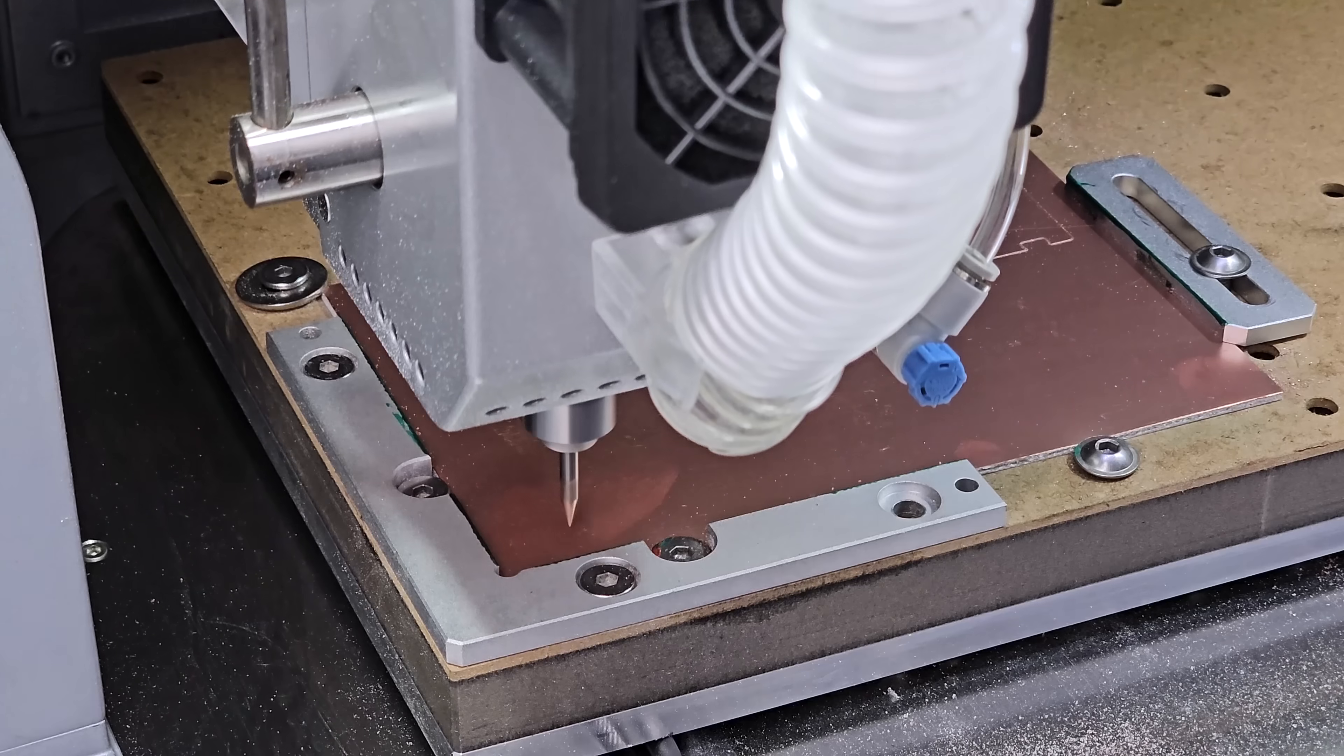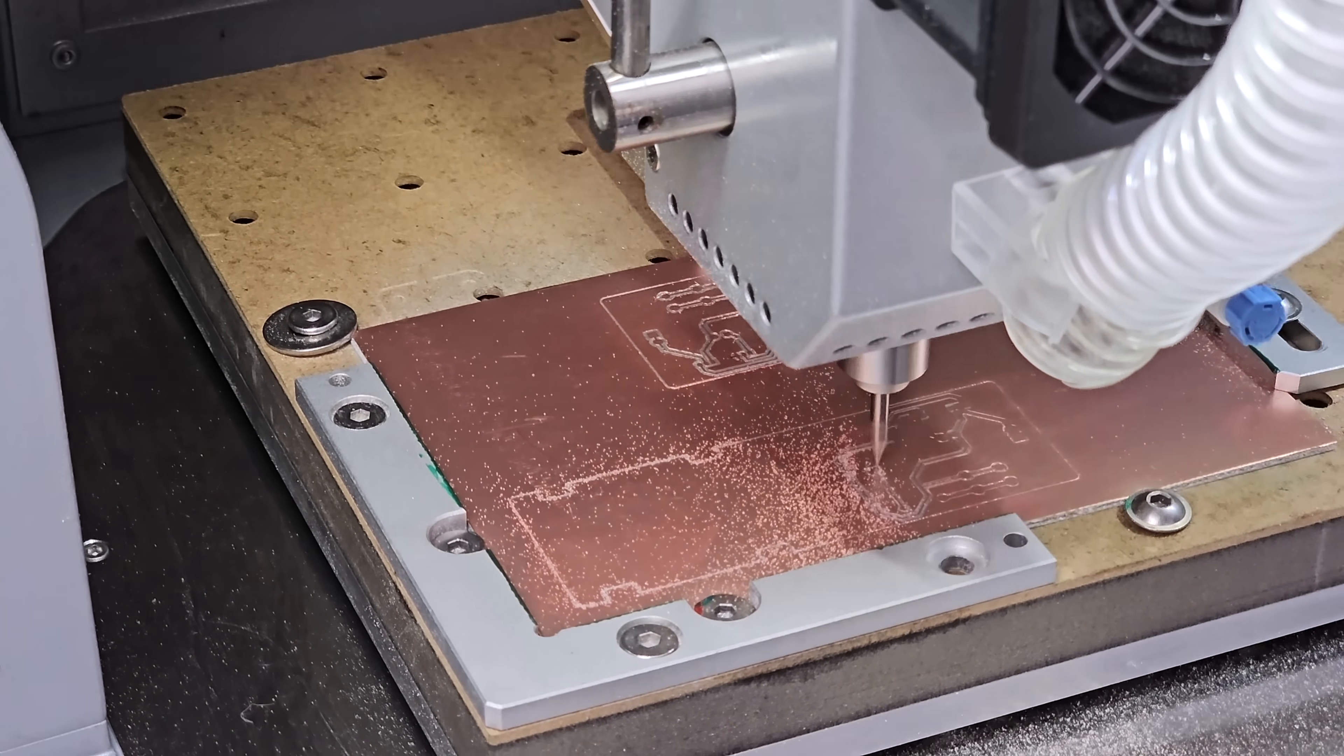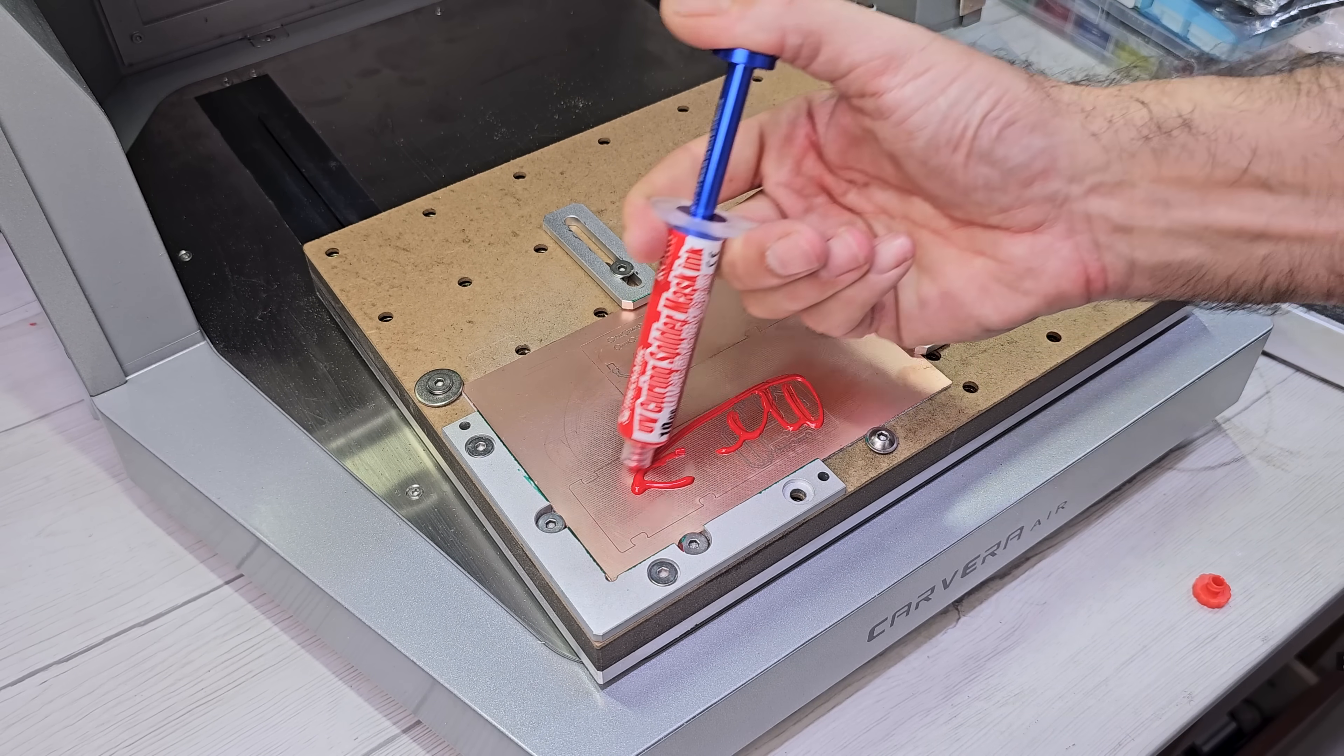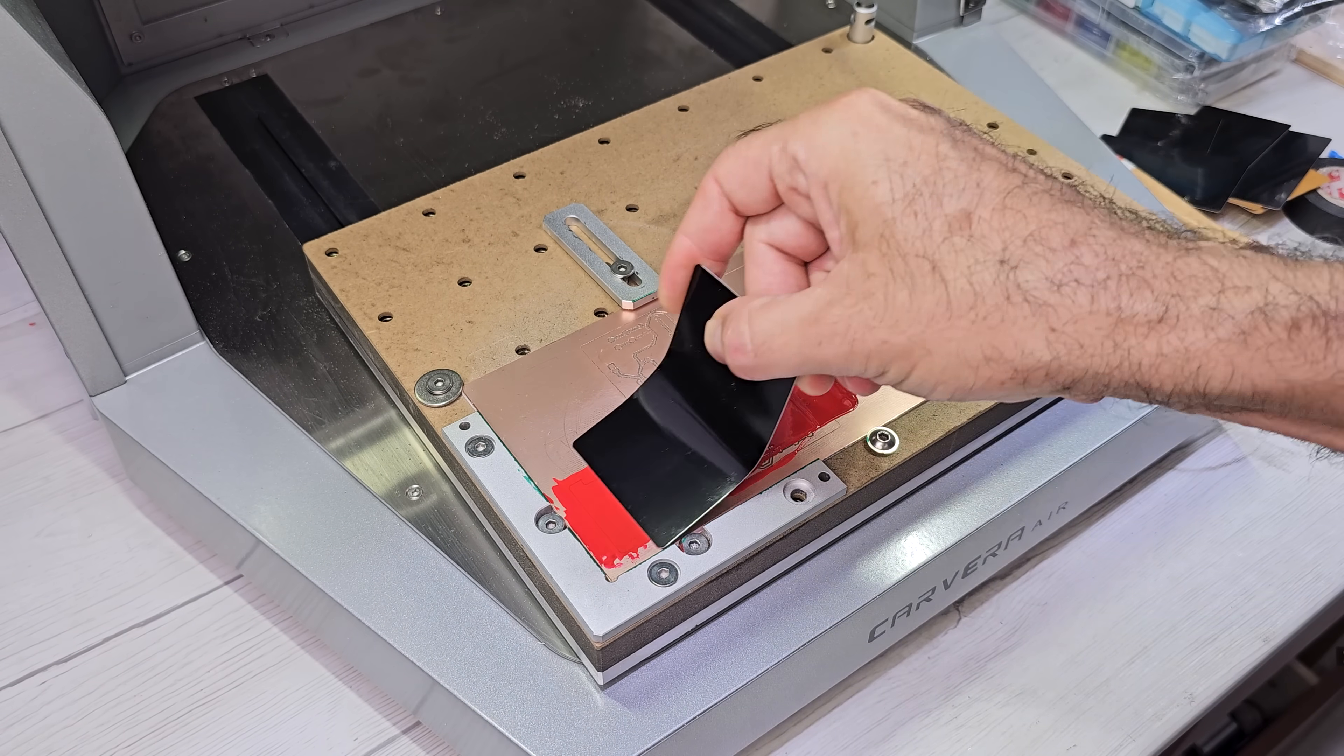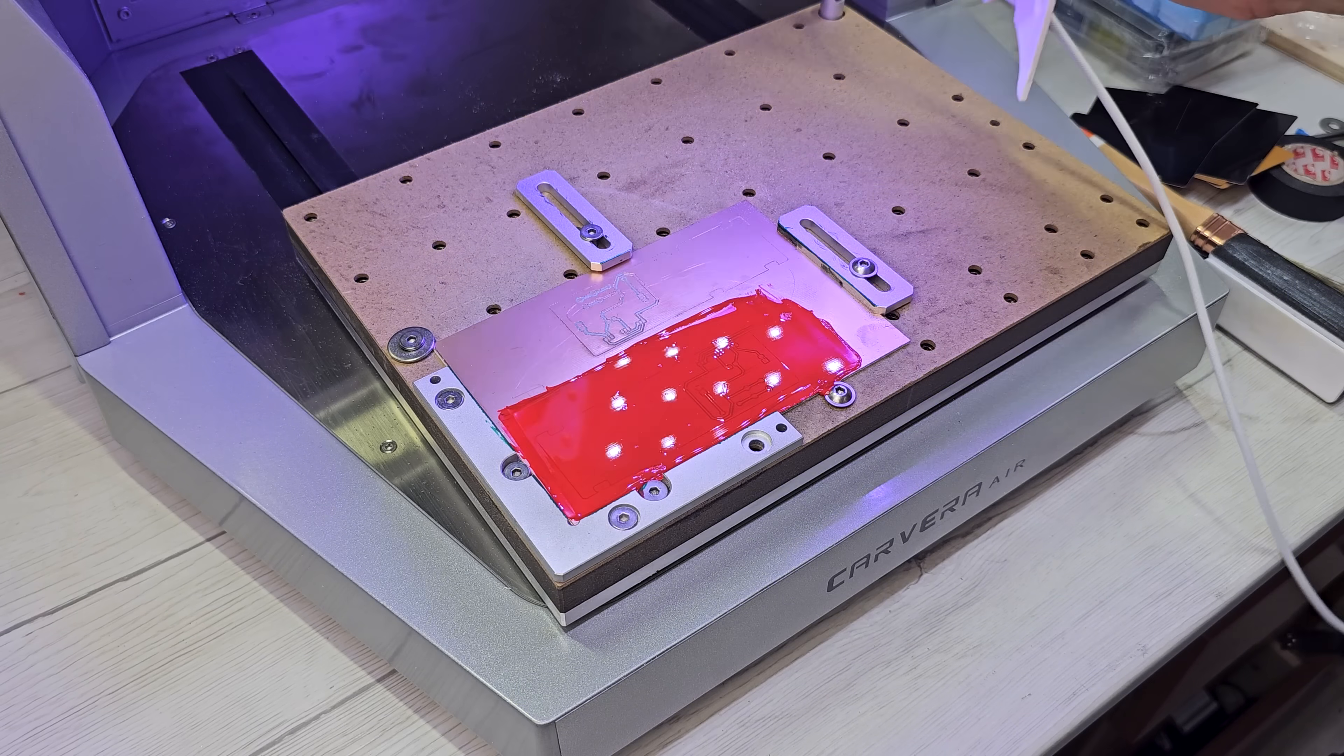The first step is to create the traces using a single flute metal milling bit. This small end mill operates on a very fine portion of its tip. The next step is to protect the board with a green solder mask resin. I use an aluminum spatula to spread the resin evenly and create a uniform coating.